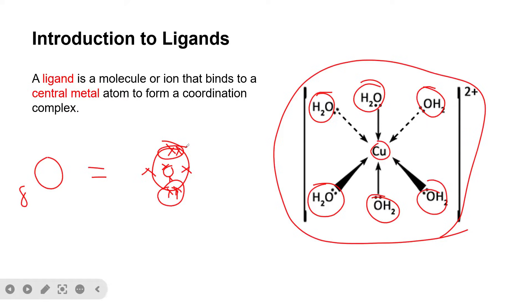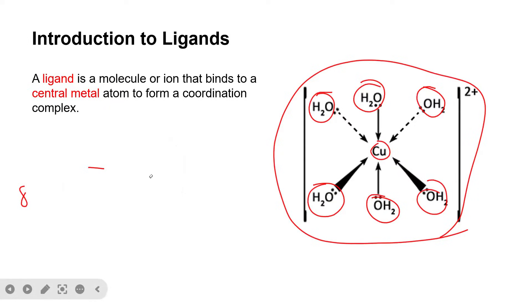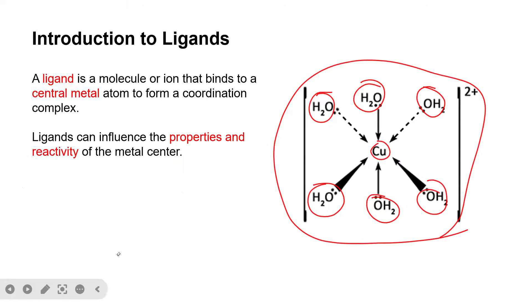That is why water is considered a monodentate ligand — because it only donates one of its lone pairs. For a compound to be considered a ligand, it must possess lone pairs of electrons. Ligands are very important in stabilizing the coordination complex and also influence the properties and reactivity of the metal.